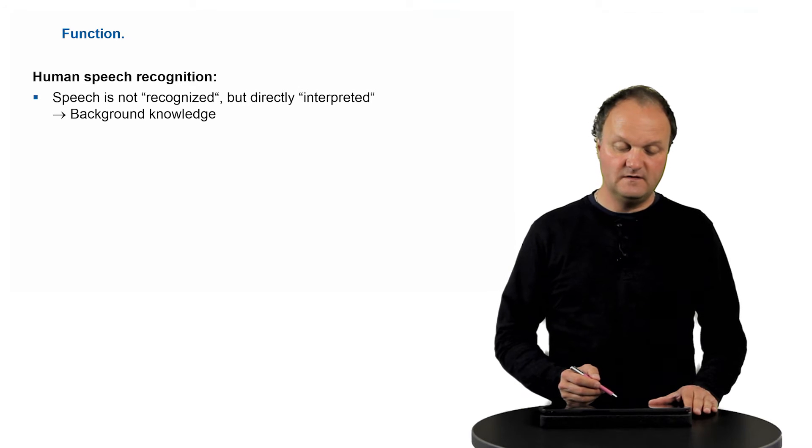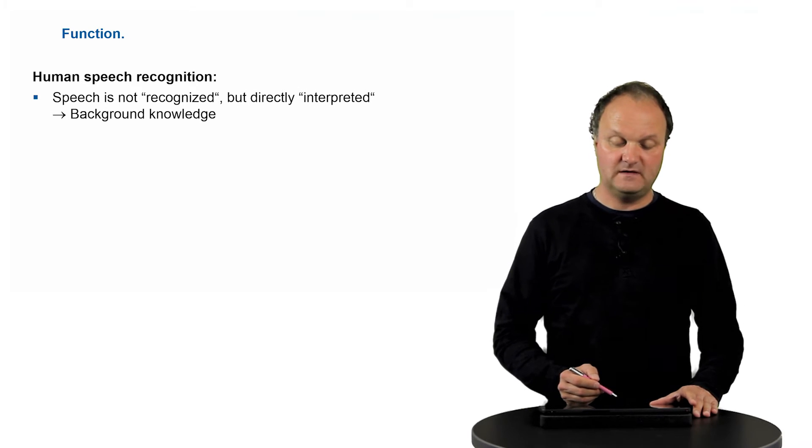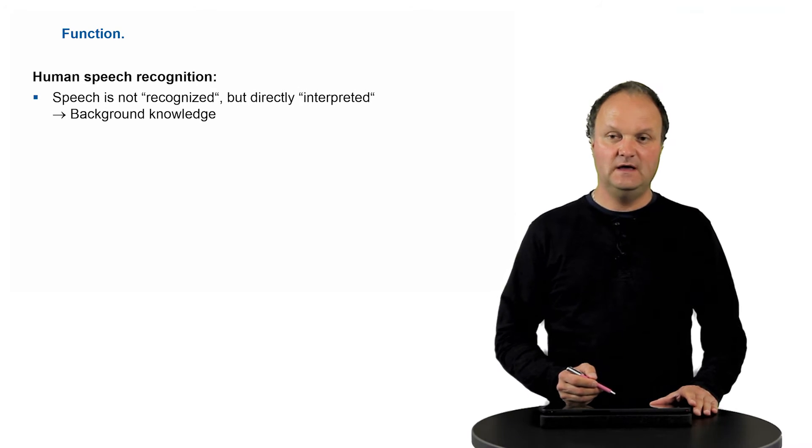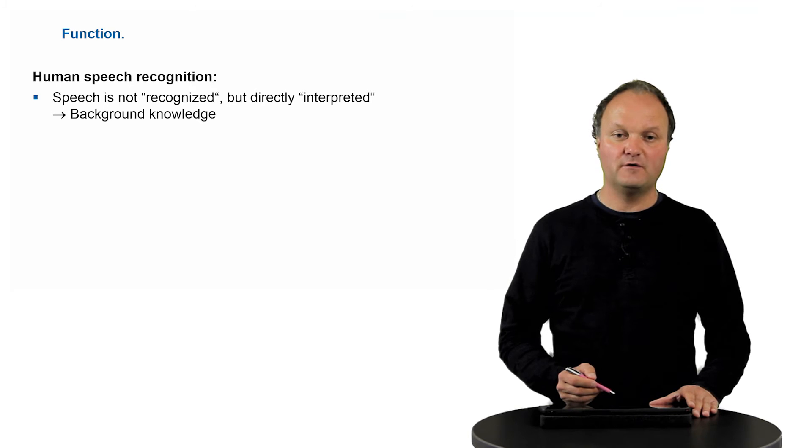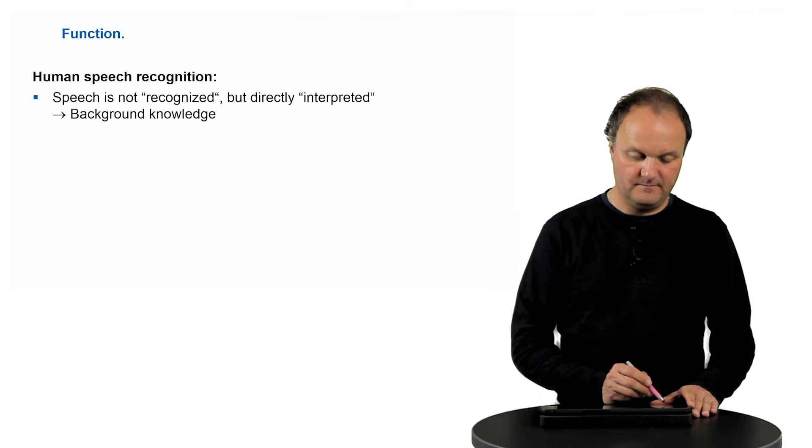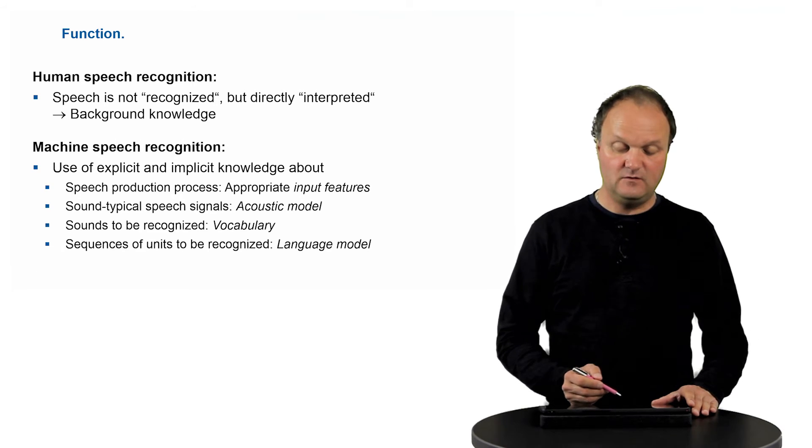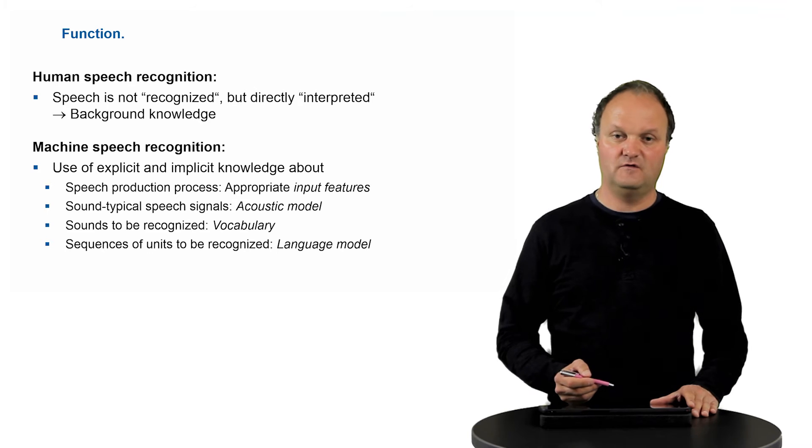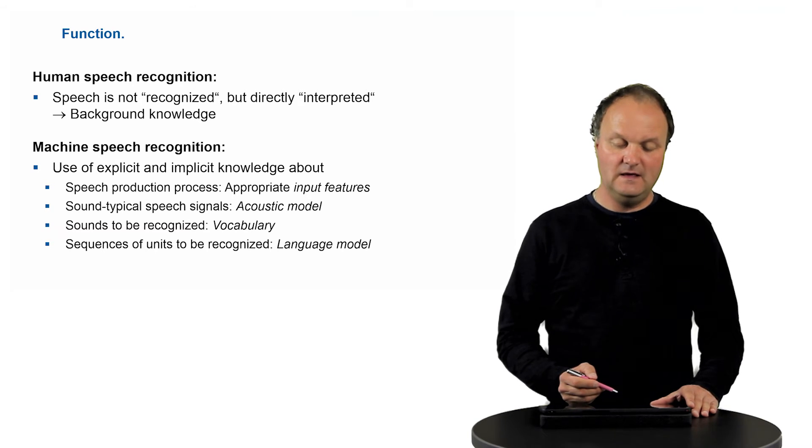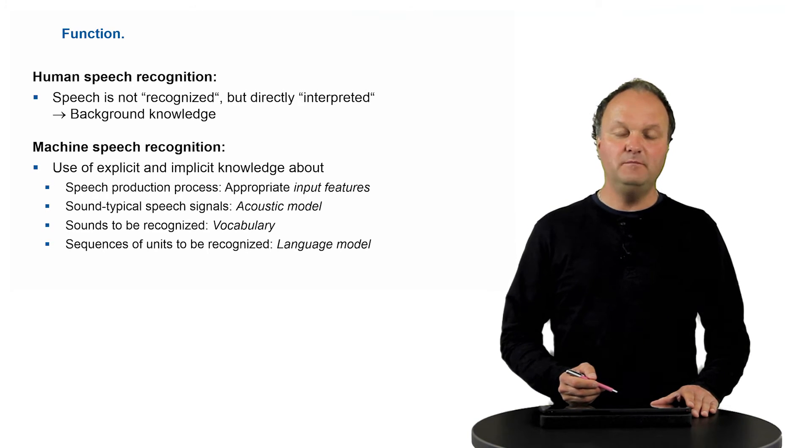So we as humans do not recognize but directly interpret speech, and we do that with our basis of background knowledge which we have learned throughout the years. For the computer, we need to teach this background knowledge to the computer in an explicit way. For example, we can teach the computer of how speech is produced, the source filter model for example, by selecting appropriate input features which contain all the information which is necessary for identifying individual sounds.